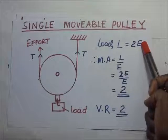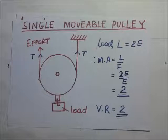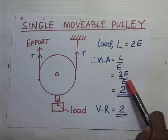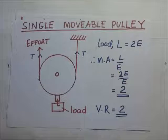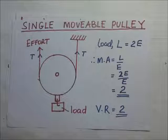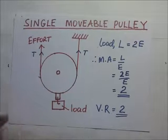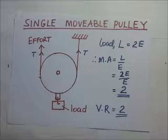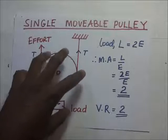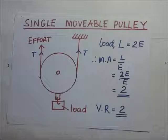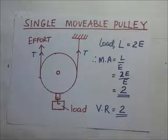So it follows therefore that the mechanical advantage is going to be equal to load over effort, and the load is 2E. Divide that by the effort E, and you find that the mechanical advantage is 2. So the mechanical advantage of a single movable pulley is 2, and the velocity ratio of the single movable pulley is 2. Because the effort moves twice the distance moved by the load.